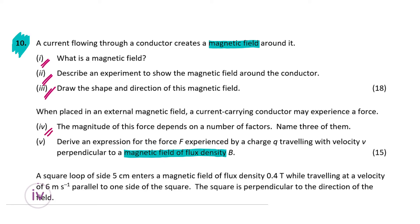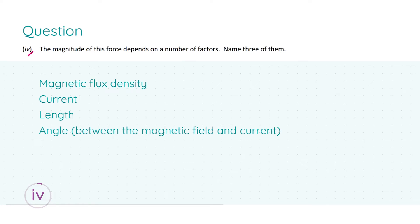Moving on to parts four and five, we are told that when placed in an external magnetic field, a current carrying conductor may experience a force. In part four we're told that the magnitude of this force depends on a number of factors and we're asked to name three of them. I have four here, a little bit extra, but put as many down as possible, anything that you can think of. You won't lose marks for doing this and it's more likely that you'll gain marks, which is what we want. So even if they only ask for three and you think of four, put four down. If one of them's wrong, one of them's wrong. It doesn't, you don't lose any marks here.